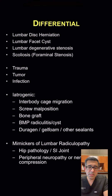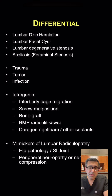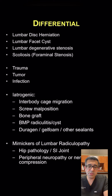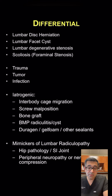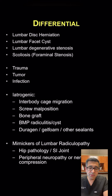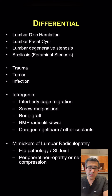Other causes of radiculopathy include trauma, tumor, and infection. For patients who have had prior surgery, radiculopathy can be caused if a screw is touching a nerve, if a cage has migrated and is pushing on a nerve, from bone graft pushing on the nerve, or from other material used during surgery that can be irritating the nerve. So there are many different causes of having radiculopathy.